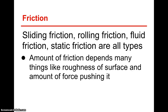So what is friction? There's sliding friction, rolling friction, fluid friction, and static friction — all different types. The amount of friction depends on many things, like the roughness of the surface and the amount of force pushing it. You can overcome friction — when you push a chair forward, you're overcoming friction. But a small child without much strength may not be able to overcome that same friction. It depends on the roughness of the surface.